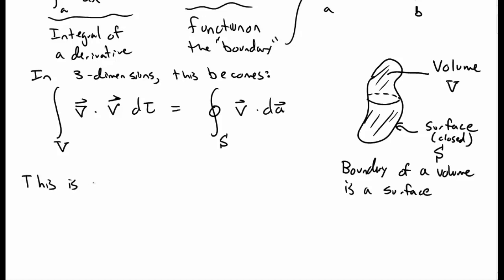So this has several different names, depending on who you talk to. This could be called the divergence theorem, kind of naturally, because you're taking the integral of a divergence. Sometimes it's called Green's theorem. And then with a physics context, you might call it Gauss's theorem. We're going to stick more with the divergence theorem, but any three of these terms would work.